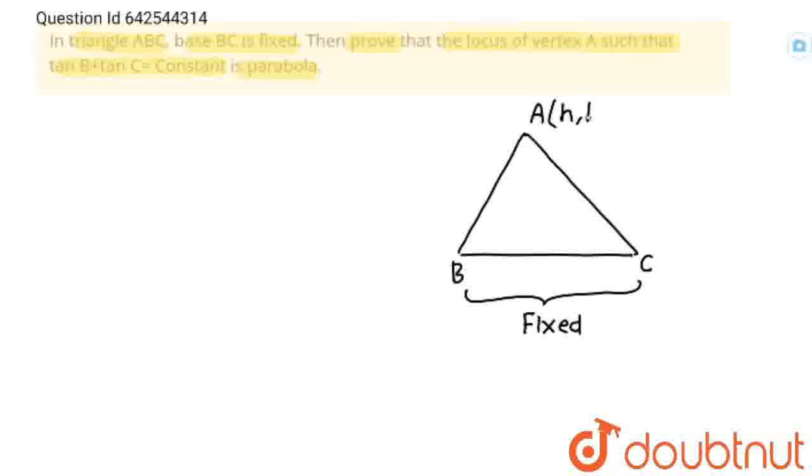Suppose its coordinates are h, k. So what is locus of A? So what is locus of A, that equation involving this h and k with no variable term will be locus of A. For that, we will have to find condition. And conditions are always given in question.